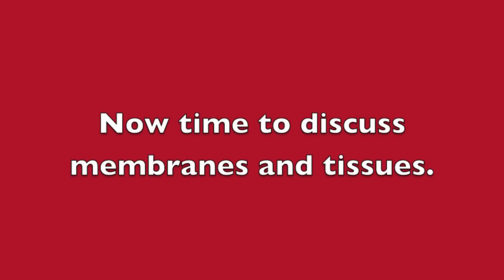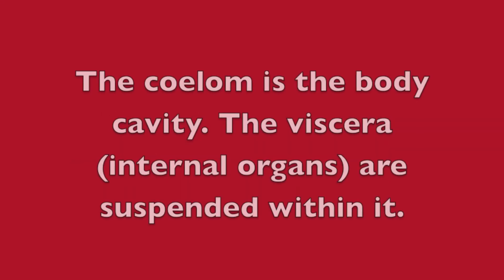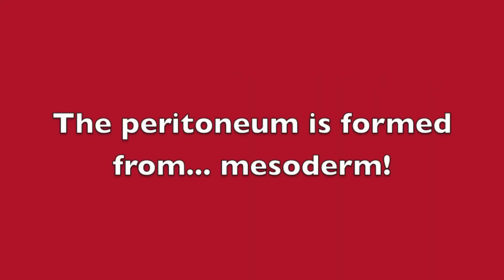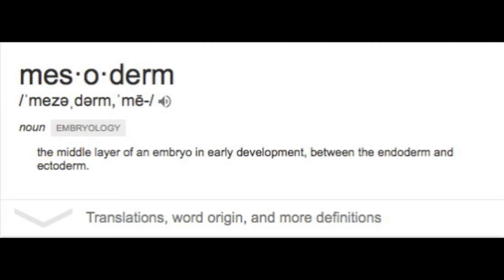Now it's time to discuss membranes and tissues. The coelom is the body cavity. The viscera are suspended within. The abdominal cavity and viscera are covered by a membrane tissue called peritoneum. The peritoneum is formed from mesoderm. We can recall that the coelomic cavity of evolutionary advanced invertebrates and vertebrates is always lined with mesodermal tissue.